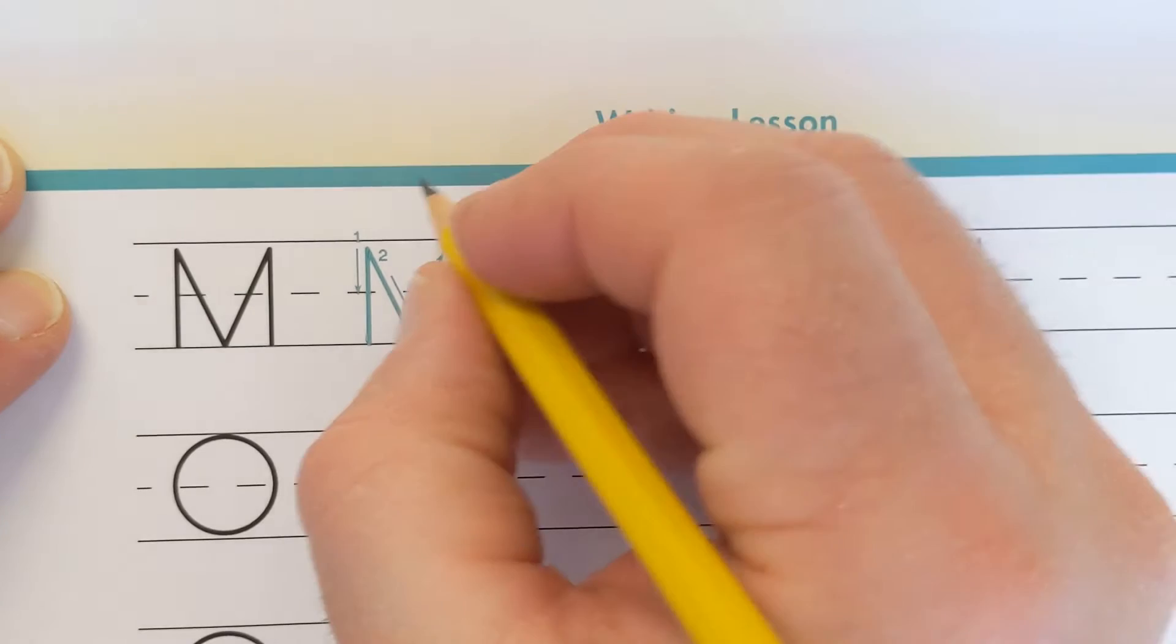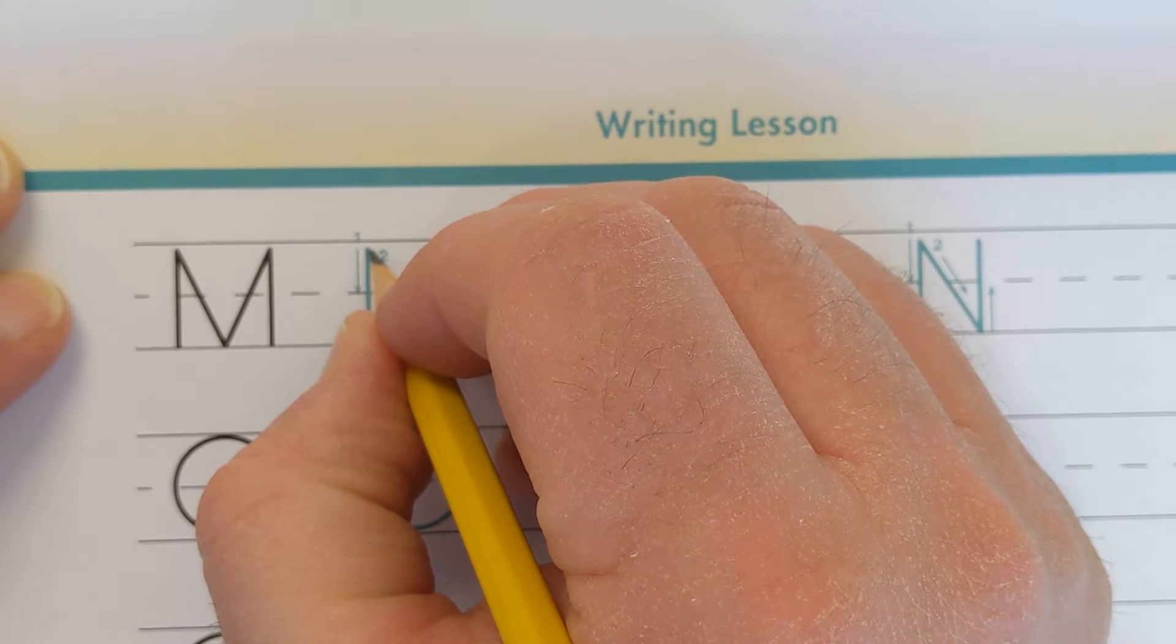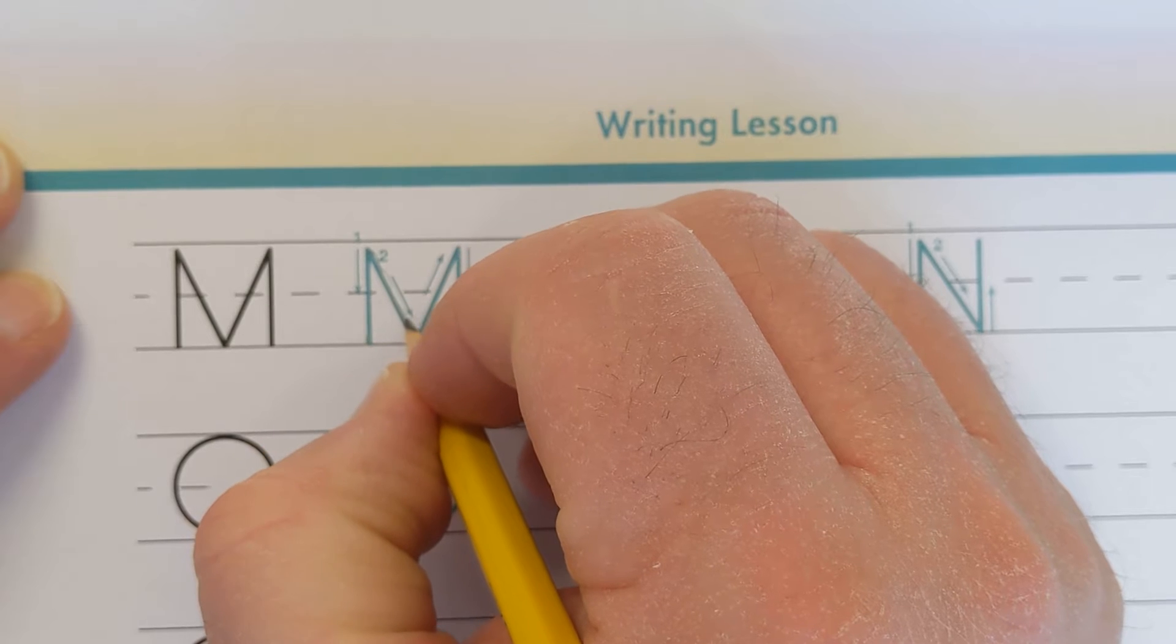Next, go back to the top of the first line. Beginning at the number 2, make a diagonal line, moving your pencil down and to the right.